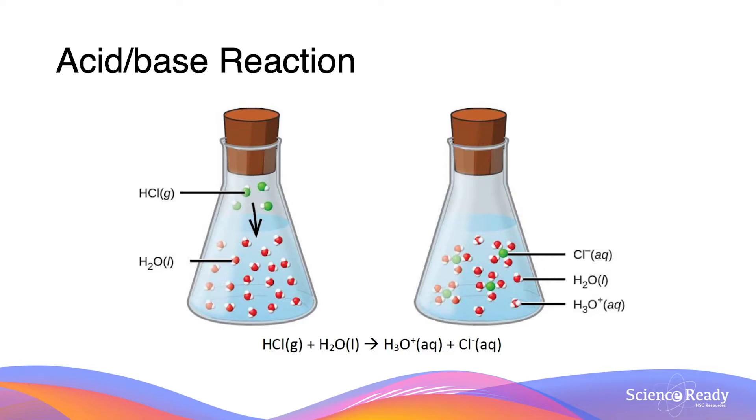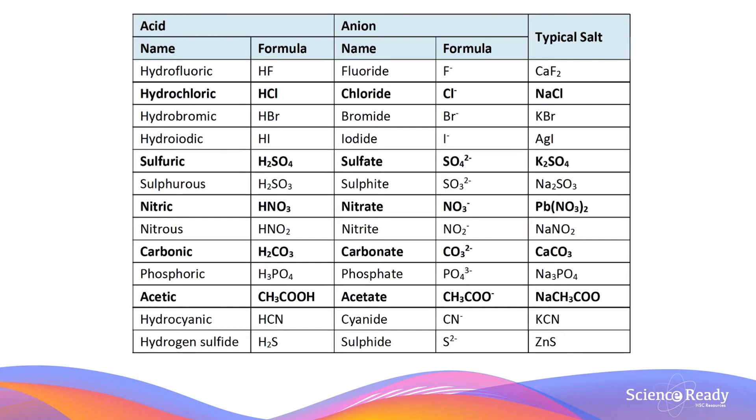Here we have an example of an acid-base reaction where the acid is reacting with water to form the hydronium ion and the chloride ions. Notice that the hydrogen ions from the HCl have been donated to the H₂O which contains the hydroxide. Here is a table of common acids. There are the anions which are formed from these acids and also the typical salts which can be found when they are reacted with a base.